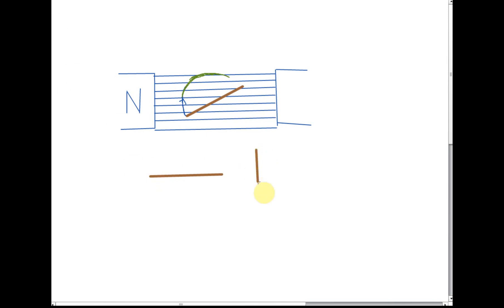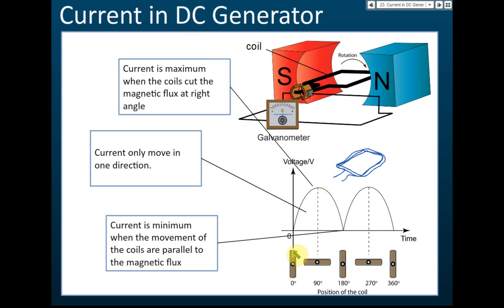When the coil is vertical, it moves a long distance but cuts only a small number of field lines, so the EMF and current produced are very low. To summarize: vertical position gives zero current, horizontal gives maximum current. Vertical zero, horizontal maximum, vertical zero again, horizontal maximum again — that is the output pattern of a direct current generator.